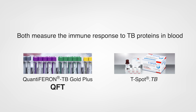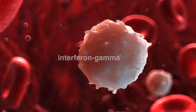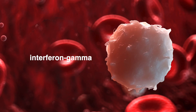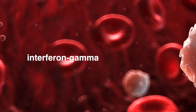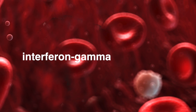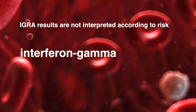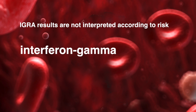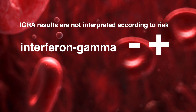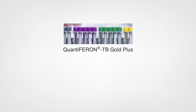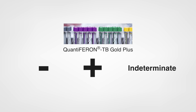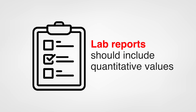Both IGRAs measure the immune response to TB proteins in blood. If someone is infected with TB bacteria, the white blood cells release interferon gamma, and test results are based on measurements of the amount of interferon gamma released. Unlike the TST, IGRA results are not interpreted according to risk; they are reported as negative or positive based on a defined cut point. For QuantiFERON, the results are reported as negative, positive, or indeterminate. An indeterminate test result represents a test failure. Lab reports should include the quantitative values that form the basis for the results.